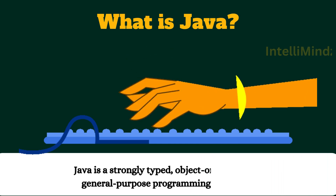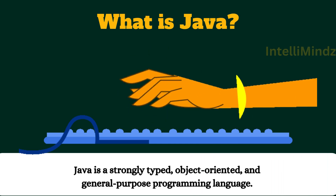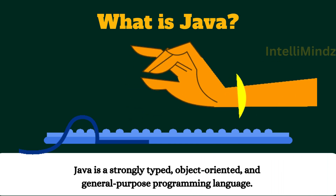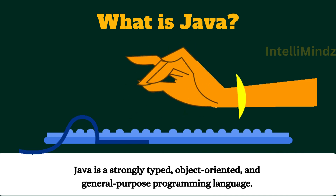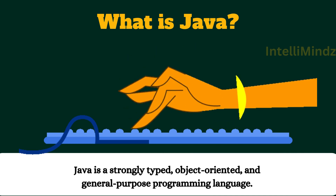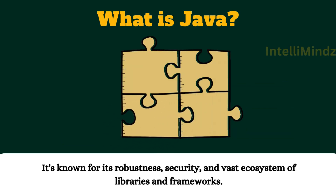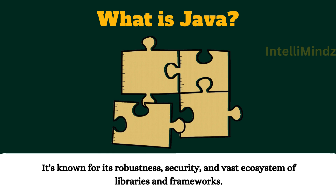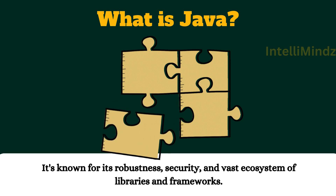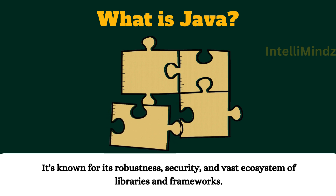What is Java? Java is a strongly typed, object-oriented, and general-purpose programming language. It's known for its robustness, security, and vast ecosystem of libraries and frameworks.